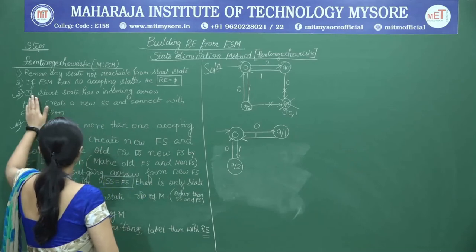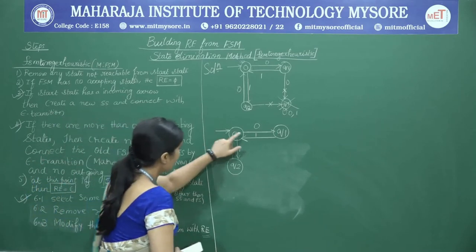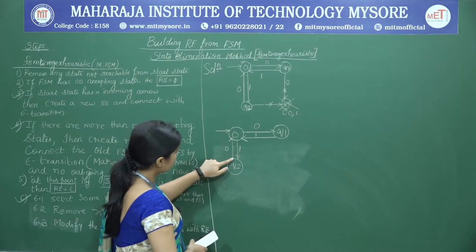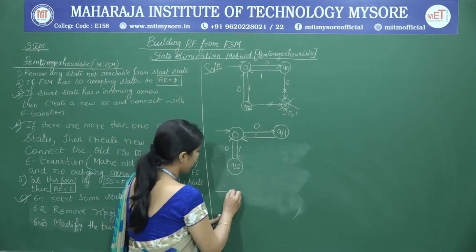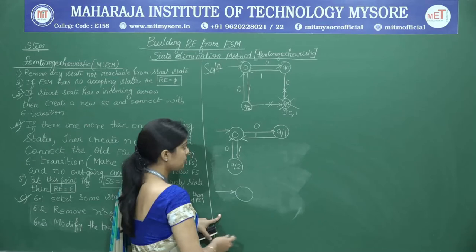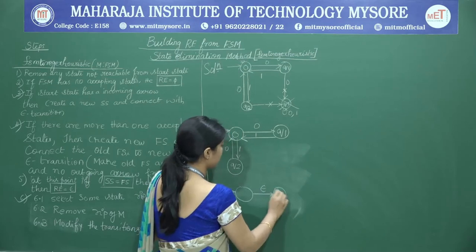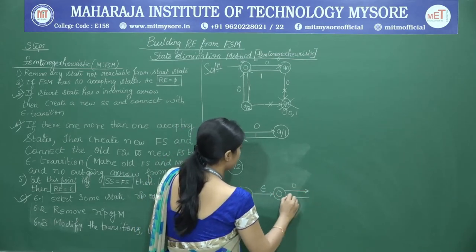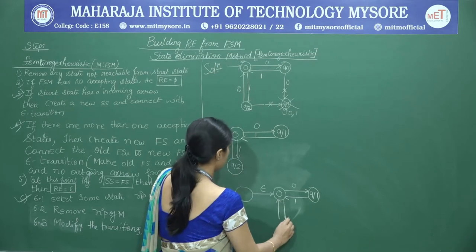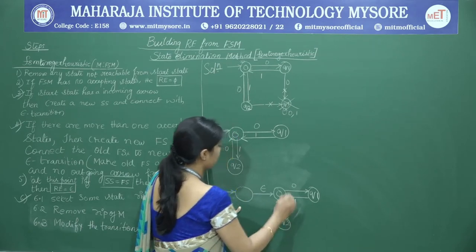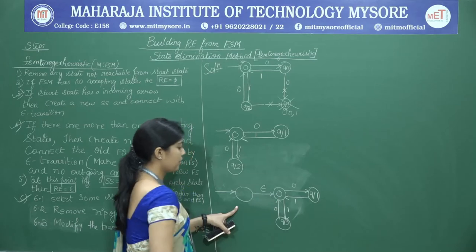We go to step 3: if the start state has an incoming arrow, create a new start state and connect it with an epsilon transition. Examining the start state, we can see there are two incoming arrows. So we create a new start state and connect it to the old start state via the epsilon transition, keeping the rest of the transitions as they are.